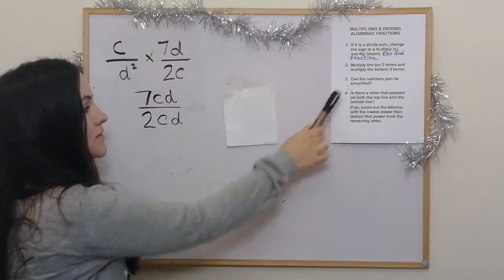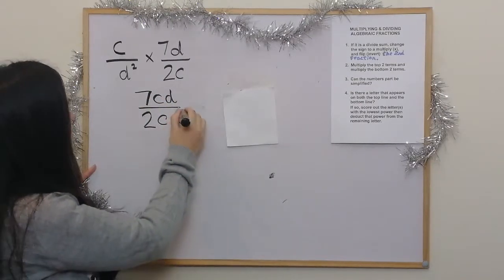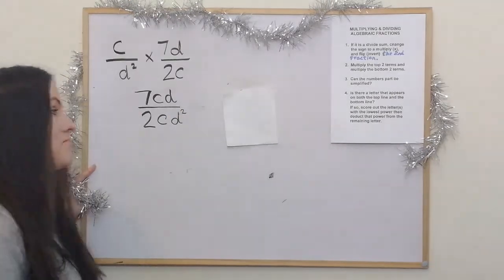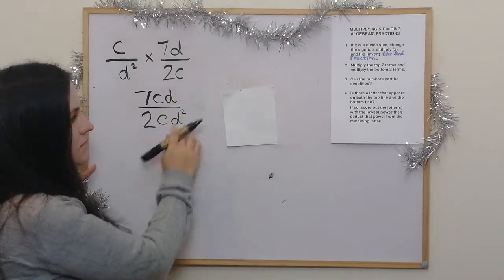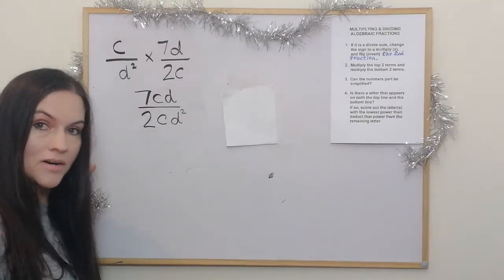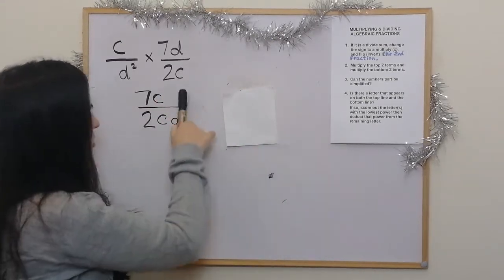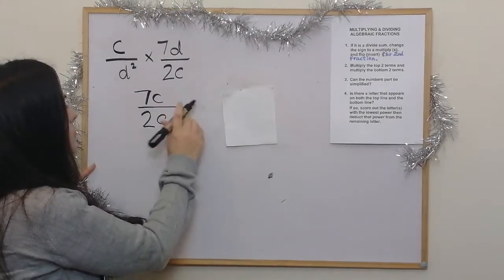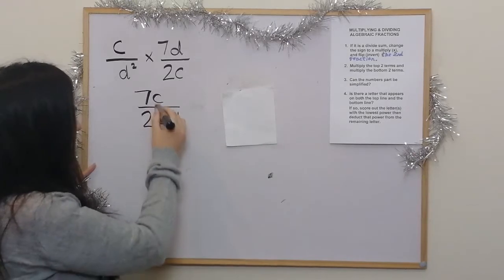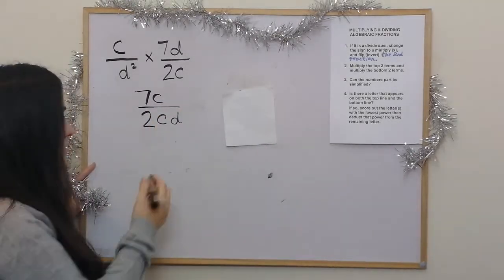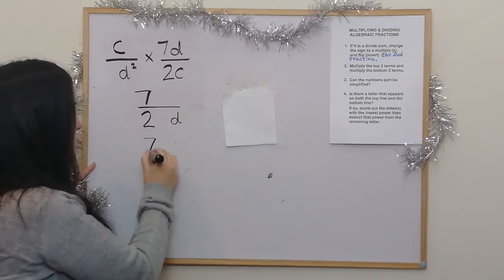Then it asks: can the numbers part be simplified? The answer is no, because there's not a number that they can both divide by, so 7 over 2 stays the same. There's also a c on both the top and the bottom, and because they're both the lowest power, they just both disappear — the c's cancel out. So the answer is just 7 over 2d.